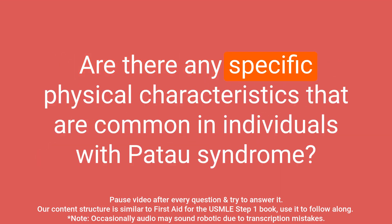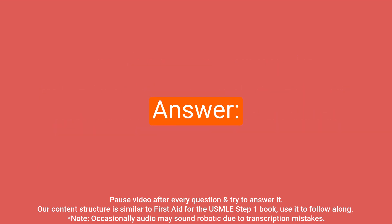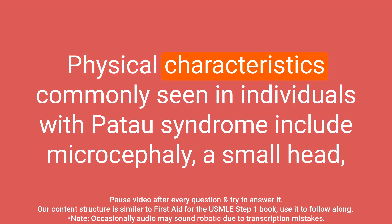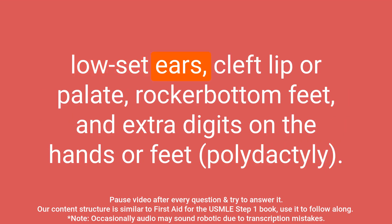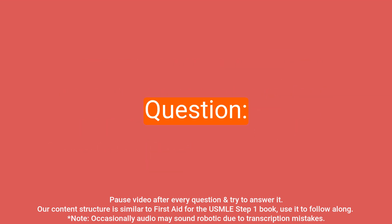Question: are there any specific physical characteristics that are common in individuals with Patau syndrome? Answer: physical characteristics commonly seen in individuals with Patau syndrome include microcephaly (a small head), low-set ears, cleft lip or palate, rocker bottom feet, and extra digits on the hands or feet.